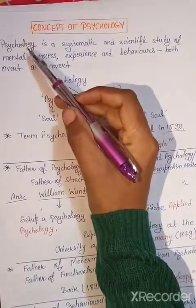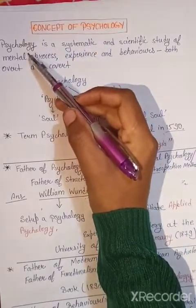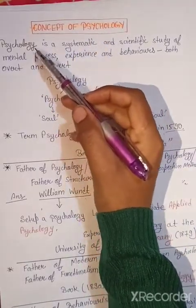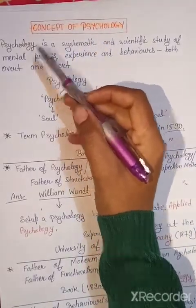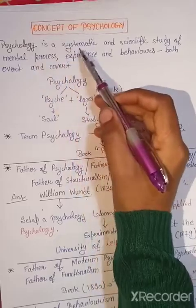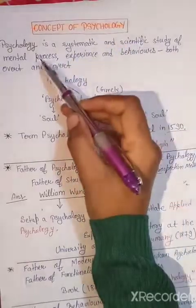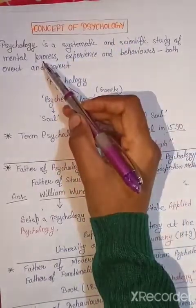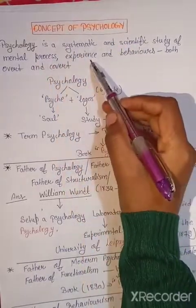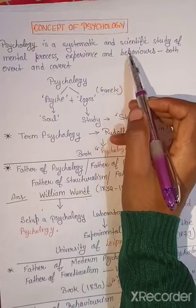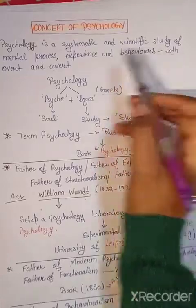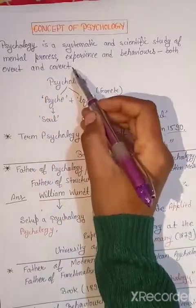Let's start with the definition of psychology. Psychology is the systematic and scientific study of mental processes, experience and behaviors, both overt and covert.